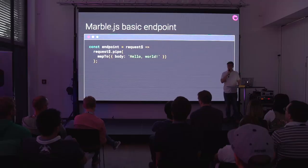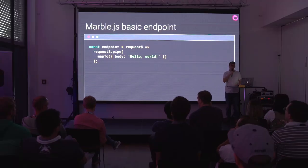An effect might look like this: you've got this observable of requests and you're mapping it into an observable of responses. In this case, for all of our requests, we just map it to the response with the body 'Hello World,' making our server a big Hello World server no matter what endpoint you hit.